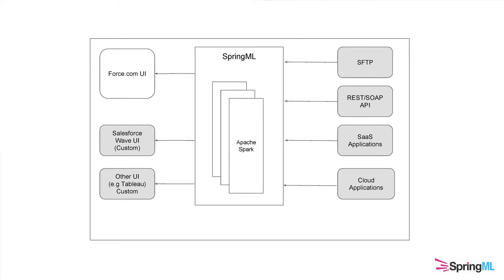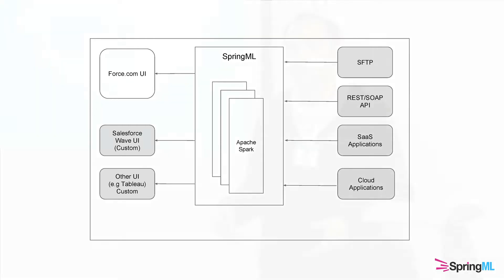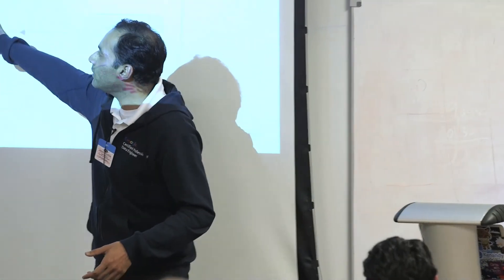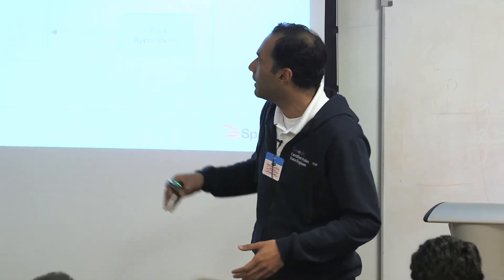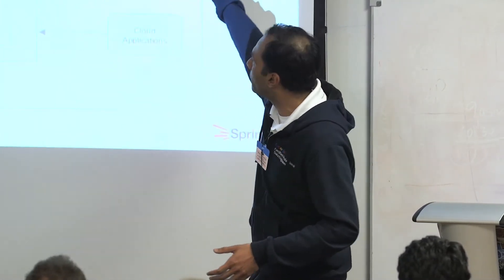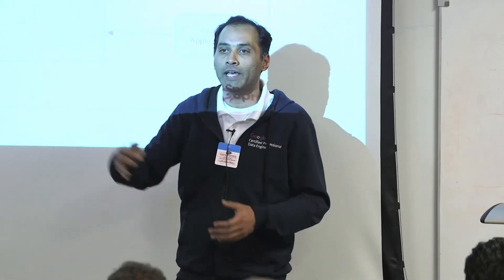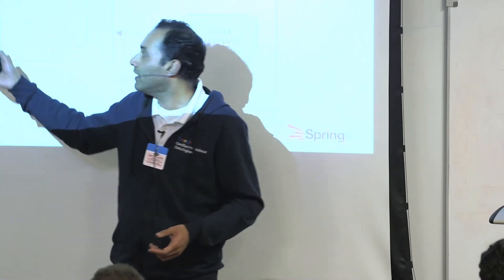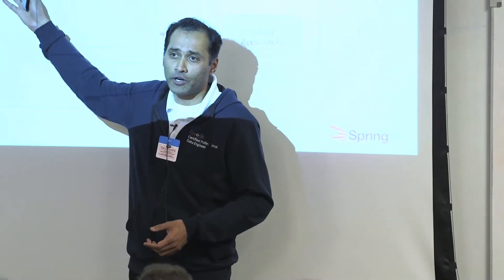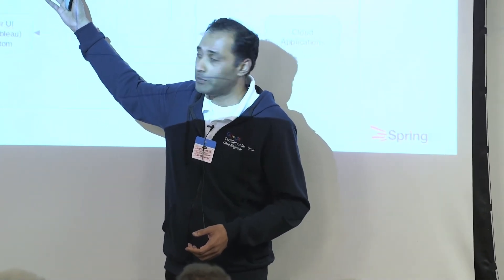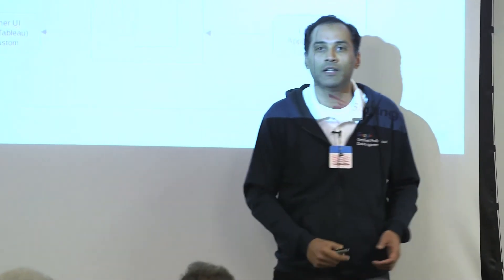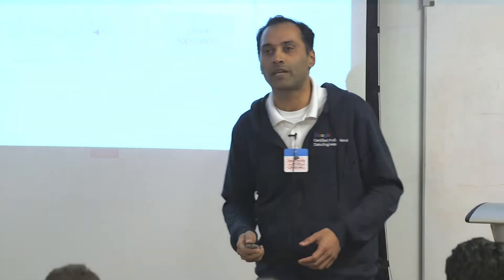This is the simple architecture we use at SpringML for our application. Primarily, we use a platform called Apache Spark, which is a distributed platform. We're able to take in data from various systems and SaaS applications — primarily relying on Salesforce — run our algorithm, and push the data back into any of your visualization systems. We have three listed here: Force.com Lightning-enabled application, Salesforce Wave analytics platform, as well as Tableau or any other BI systems that customers might have.